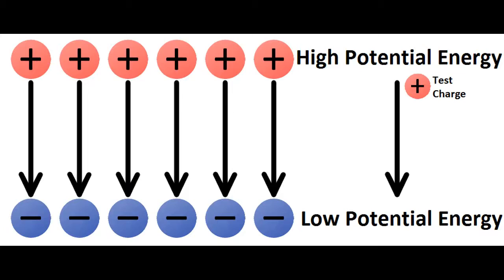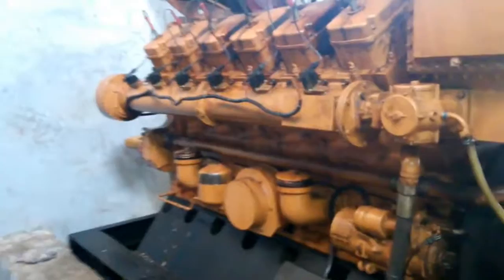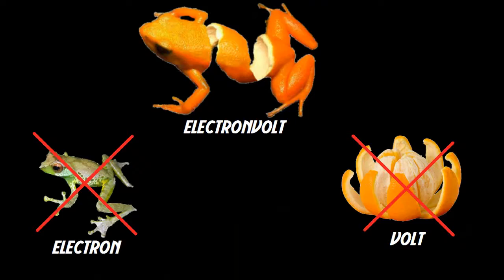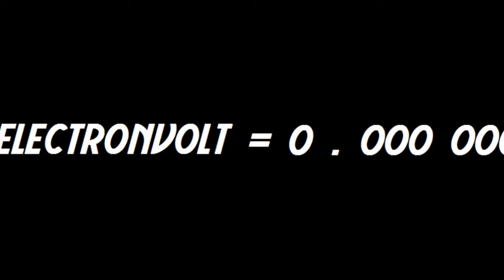An electron is a negatively charged elementary particle, and a volt is a unit of electric potential, electric potential difference, and electromagnetic force. An electron volt is none of these two — it is an extremely small unit of energy.